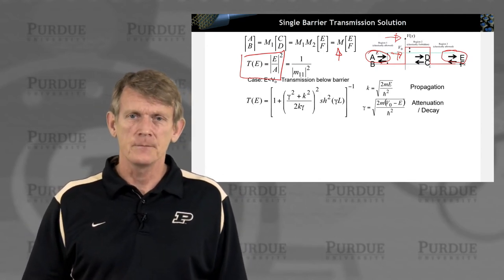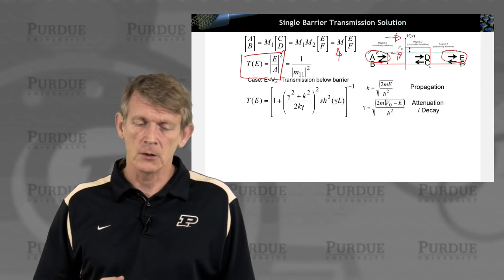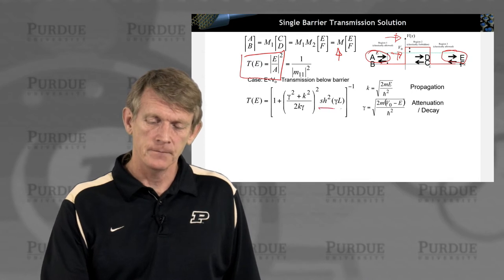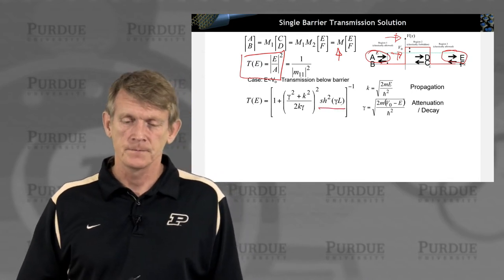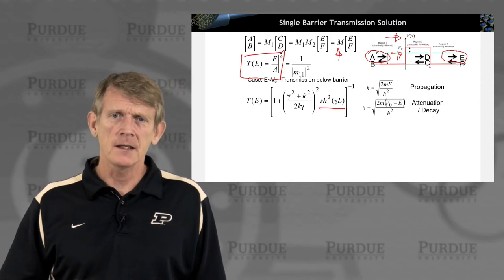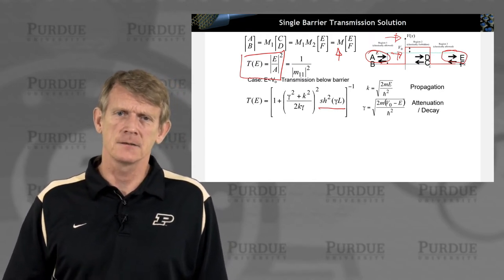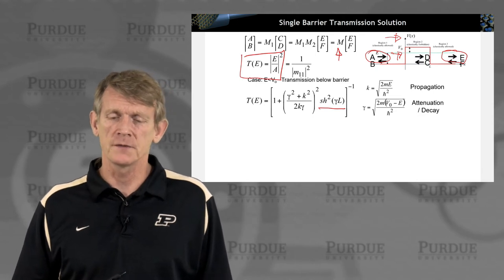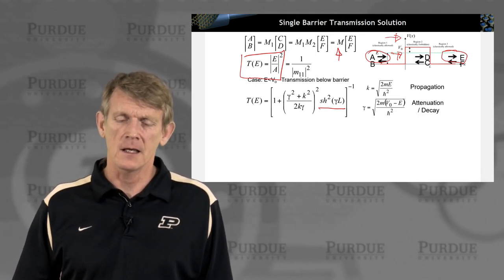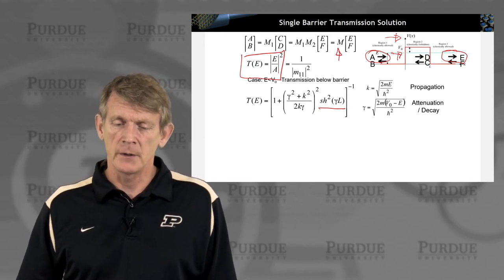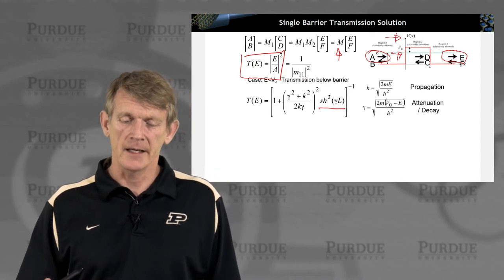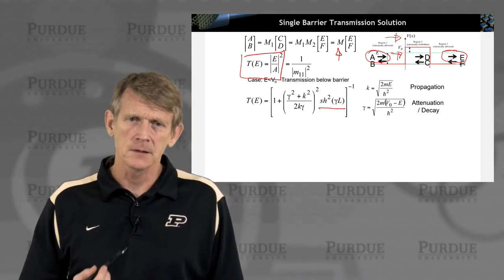The expression you get here looks reasonably horrendous. It depends on hyperbolic sine squared. A hyperbolic sine has components of exponential decay in it, which might sound familiar because we started with a solution of electrons that are decaying in the barrier. It is governed by barrier length L and by the decay length gamma. That kind of makes sense.